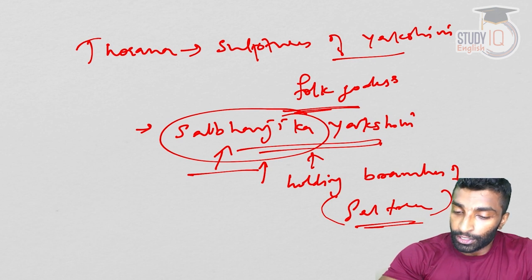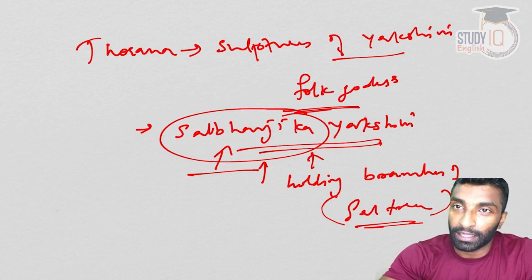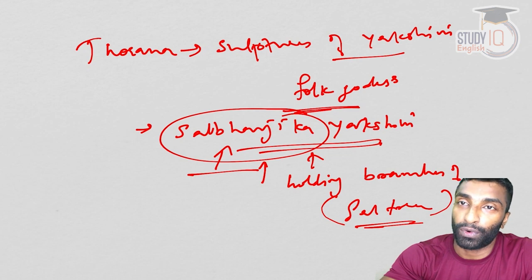That's it — this is what I wanted to discuss about stupas. I hope you understood whatever we have discussed. Just remember the diagram and what each part signifies — the Toranas, the four different gates and their corresponding life stages of Buddha going east, south, west, and north. If you liked the video, give a thumbs up. See you in the next session. Thank you so much for watching.